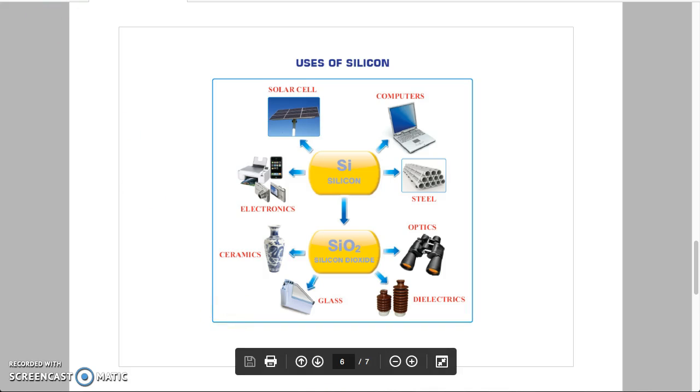The uses of silicon. Elemental silicon has a large impact on the modern world economy. As you can see, silicon is used in production of electronic devices, in production of solar cells, in production of steel.